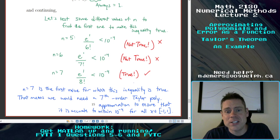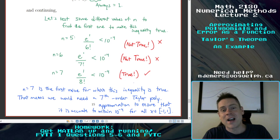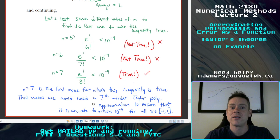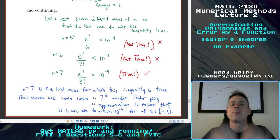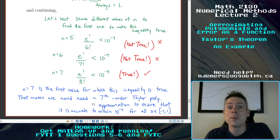A little bit challenging. There are a couple of details: that error term was always going to be positive due to the nature of the exponential function. But in general you probably want to deal with the absolute value of the error for problems like this — because otherwise you could say some large negative quantity is less than 10 to the minus 4, which is clearly not in the spirit of the question. So keep that in mind; it might come in handy for certain homework questions.